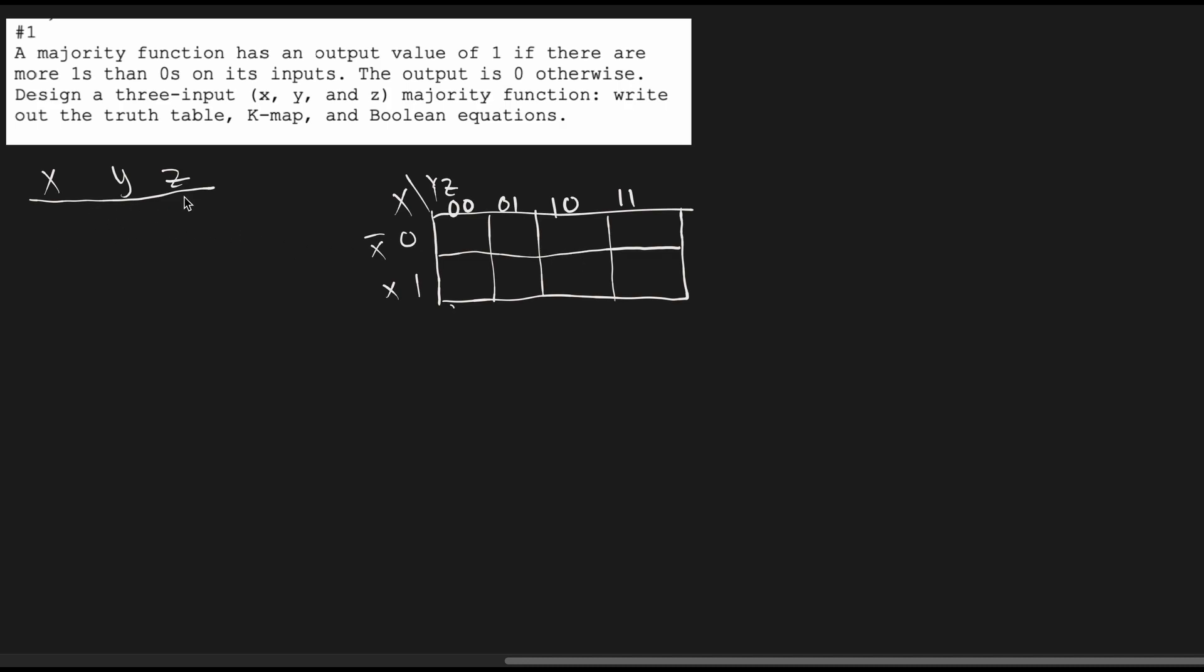For our x, y, and z, we're going to have zero zero zero, zero zero one, zero one zero, zero one one, and we're going to do this twice because we have just one x. So for x, we're just going to have zero zero zero zero, and then one one one one.